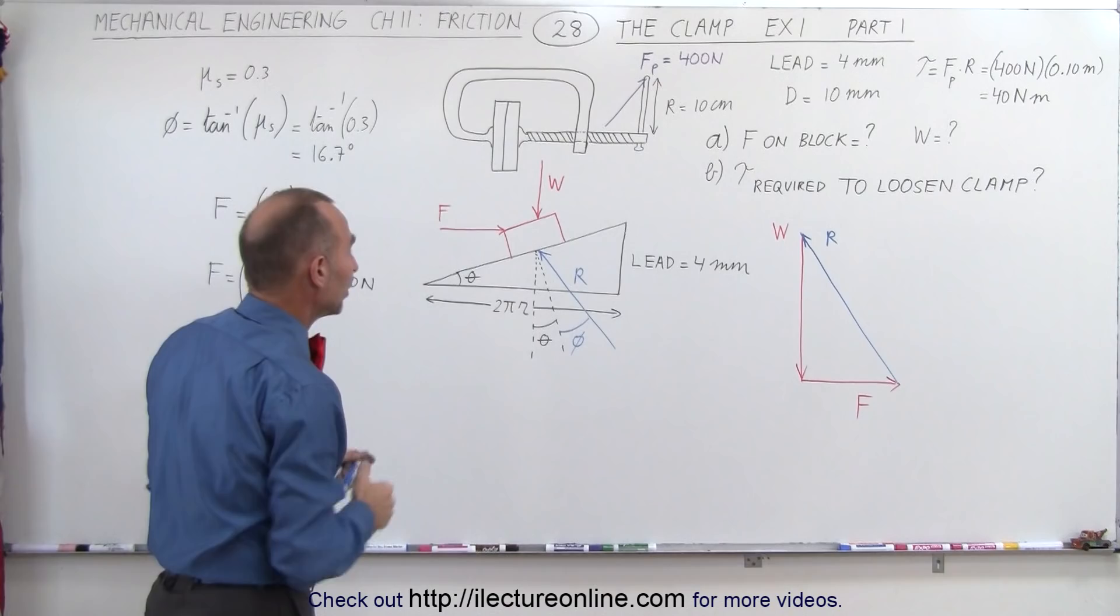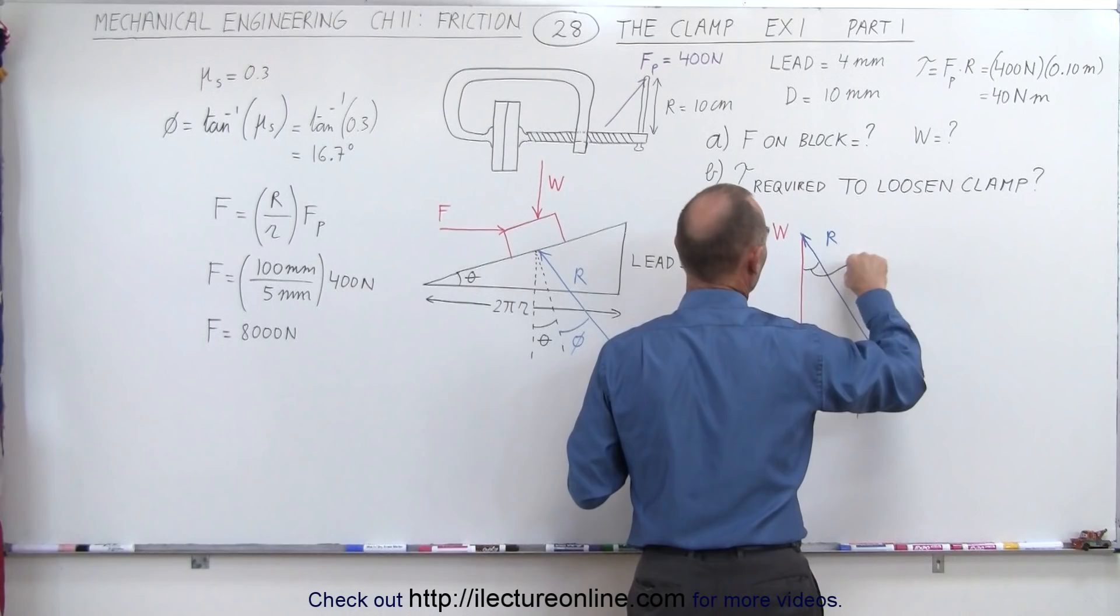It's simply the sum of the two, which means that this angle here is going to be the sum of theta plus phi. That's the lead angle plus the angle caused by the friction.